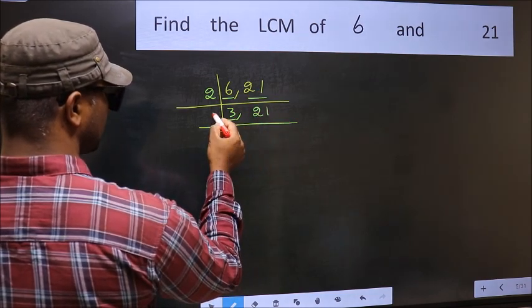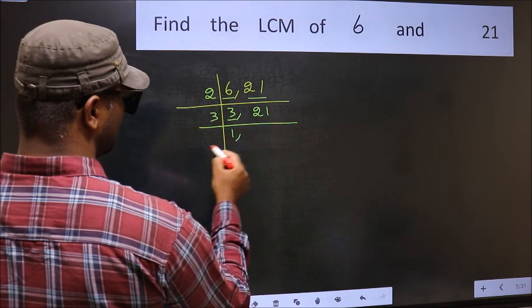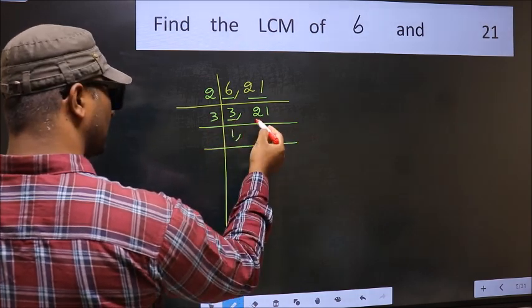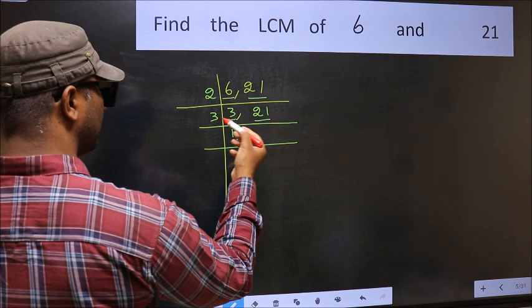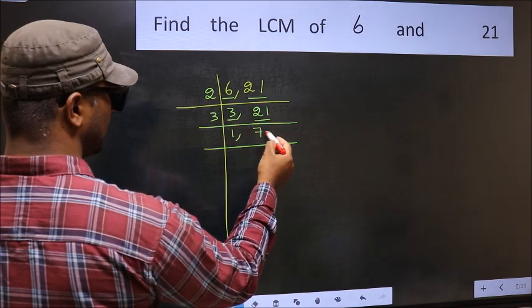Now here we have 3. 3 is a prime number, so 3 divided by 3 is 1. The other number 21, when do we get 21 in the 3 table? 3 times 7 is 21.